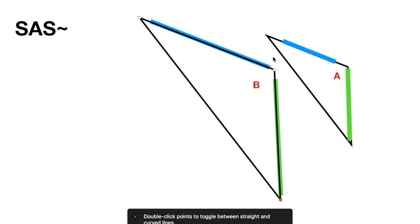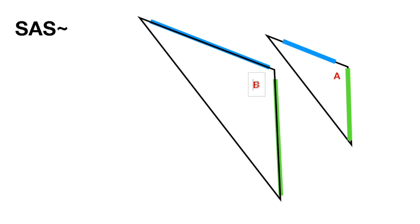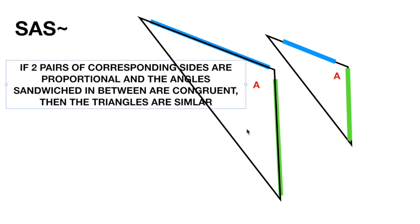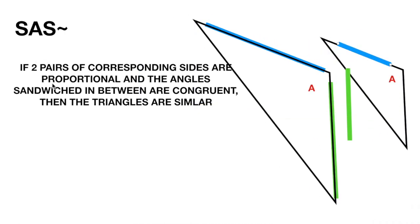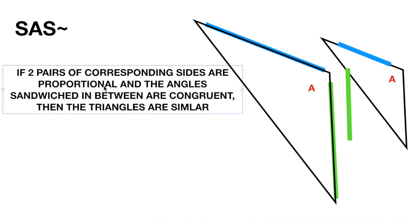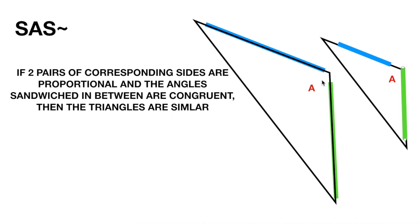So in order for side-angle-side similarity to work, two pairs of sides have to be proportional to each other — if one side is twice as long, the other has to be twice as long too. And the angles in between have to be congruent: if this angle A is 130 degrees, then this angle A has to be 130 degrees. Here is the formal definition of side-angle-side: if two pairs of corresponding sides are proportional and the angle sandwiched in between — make sure the angle is between the two proportional sides.